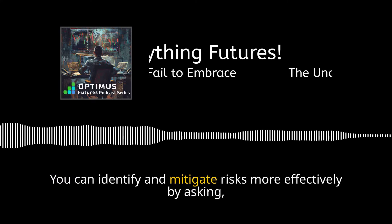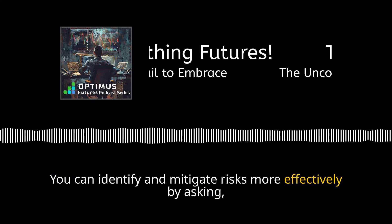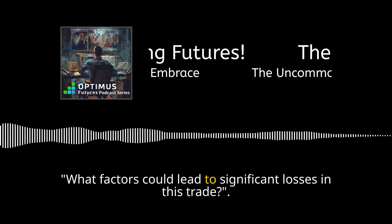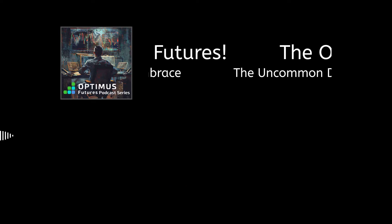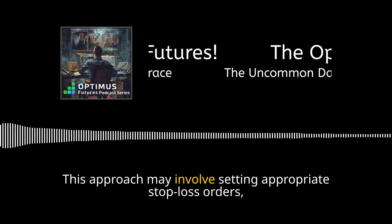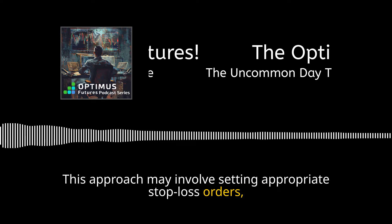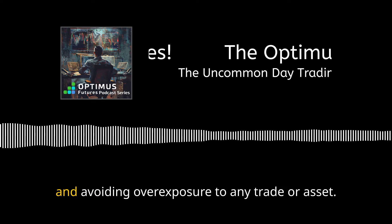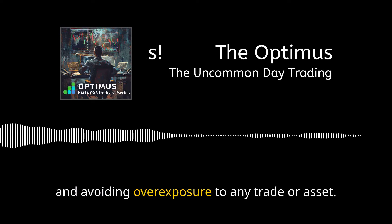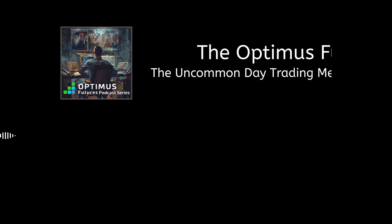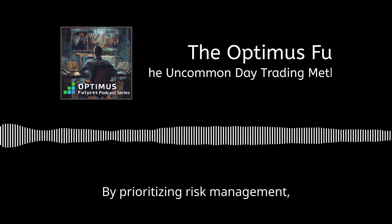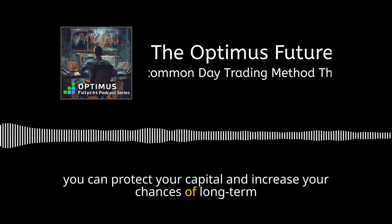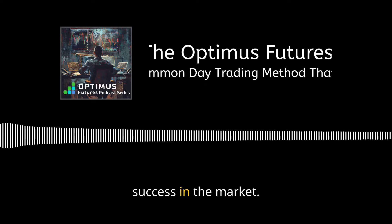You can identify and mitigate risks more effectively by asking, 'What factors could lead to significant losses in this trade?' This approach may involve setting appropriate stop-loss orders, diversifying your portfolio, and avoiding overexposure to any single trade or asset. By prioritizing risk management, you can protect your capital and increase your chances of long-term success in the market.